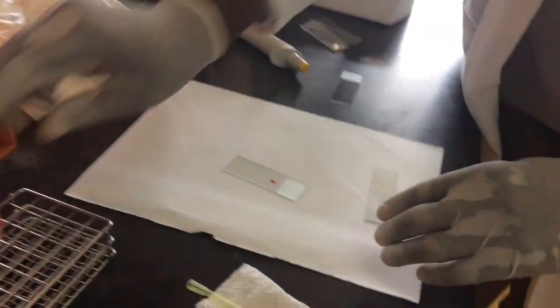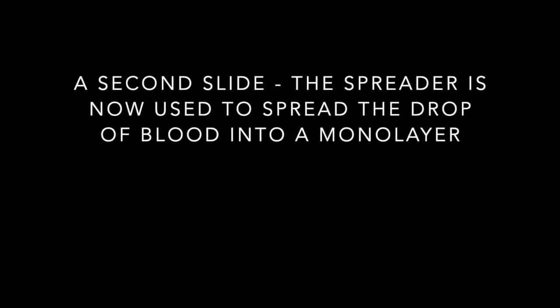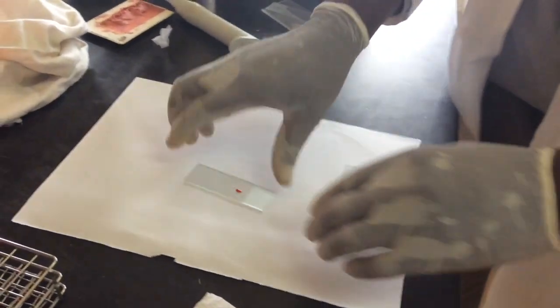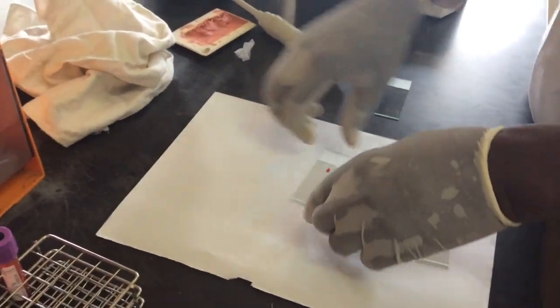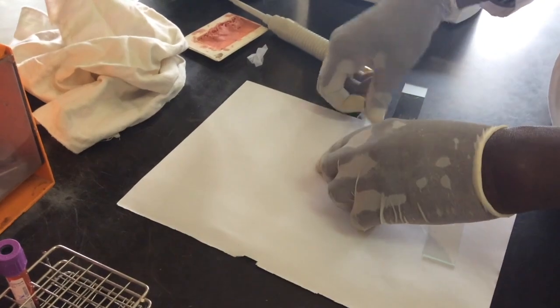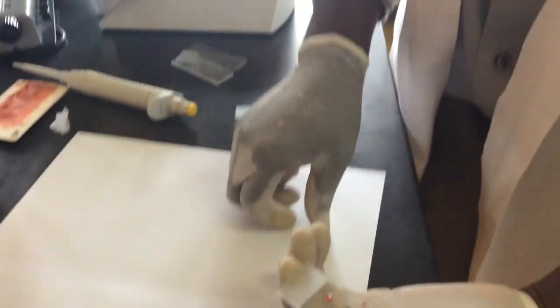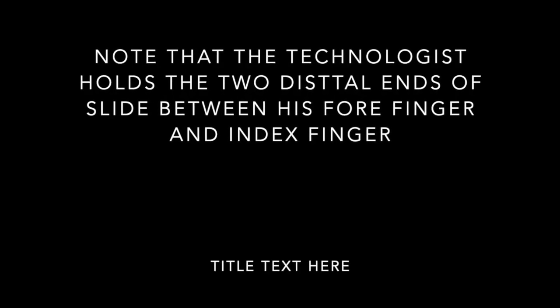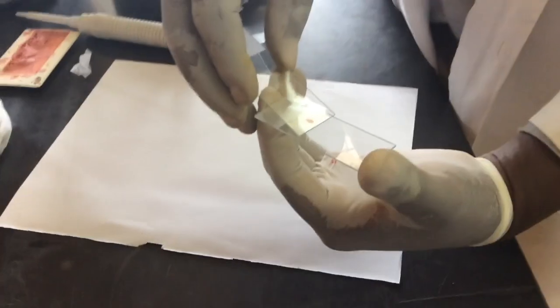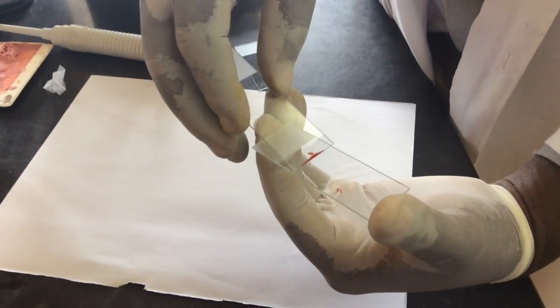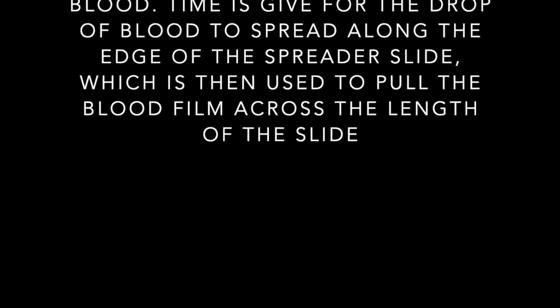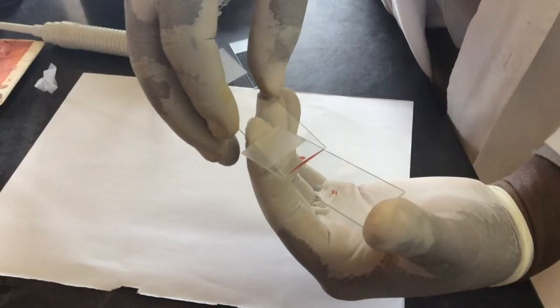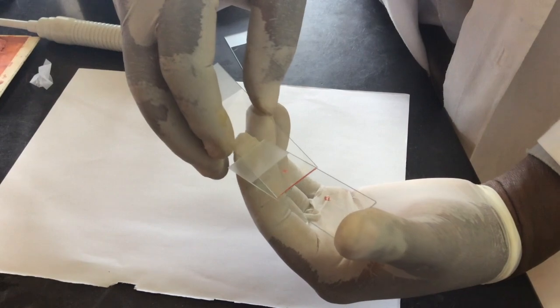So he's going to use the second slide to spread that drop of blood. He holds the slide between his thumb and index finger. Now with the second slide, he moves backwards to meet the drop of blood. It spreads across the slide and pushes it forward.